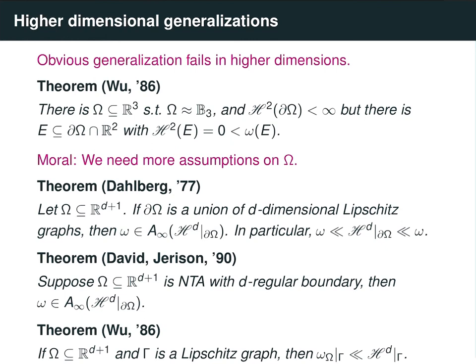Yang Mei Wu later gave a local version of these results. She showed that if you have a domain in Euclidean space and gamma is some Lipschitz graph, then harmonic measure for the domain omega is absolutely continuous with respect to Hausdorff measure on this graph. This means you don't need to know that the boundary of the domain is rectifiable or Ahlfors regular. Her result holds in somewhat more generality, but we state it for Lipschitz graphs and NTA domains for simplicity.